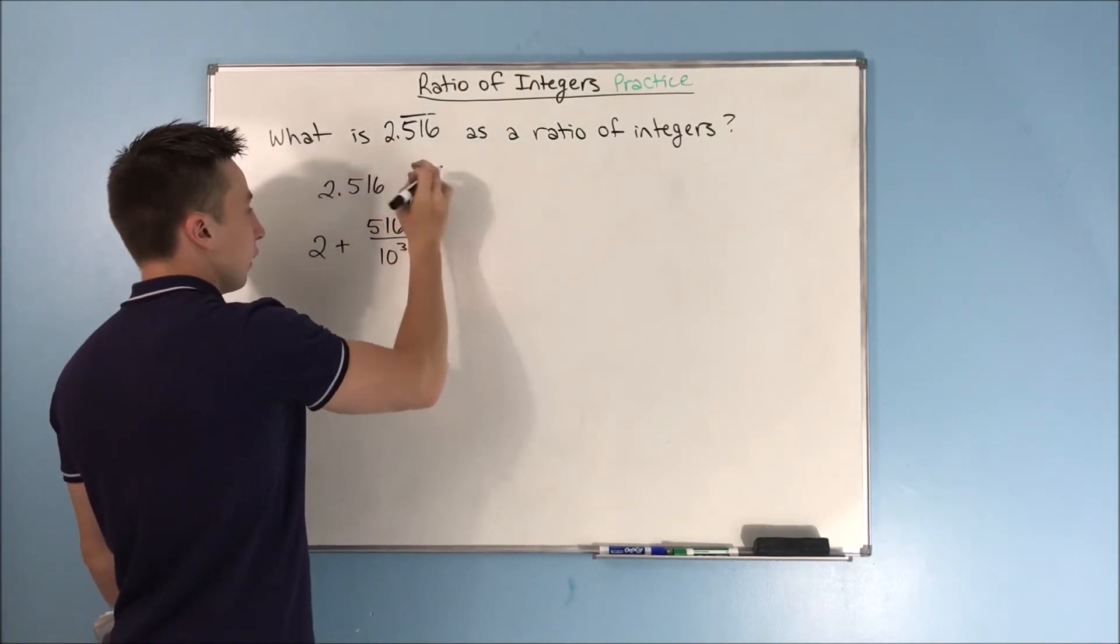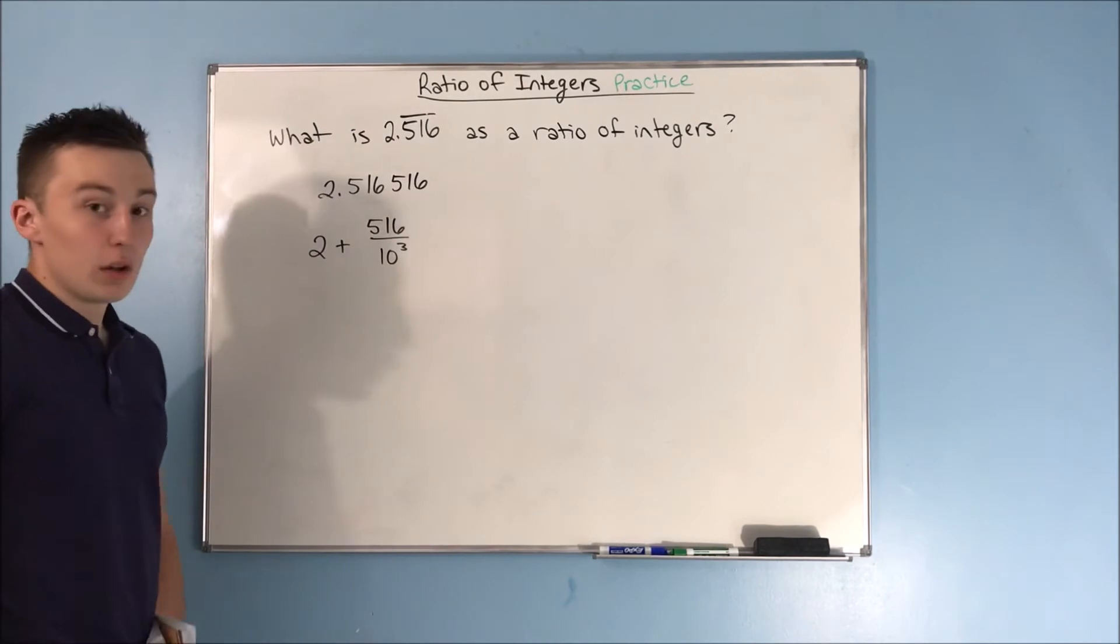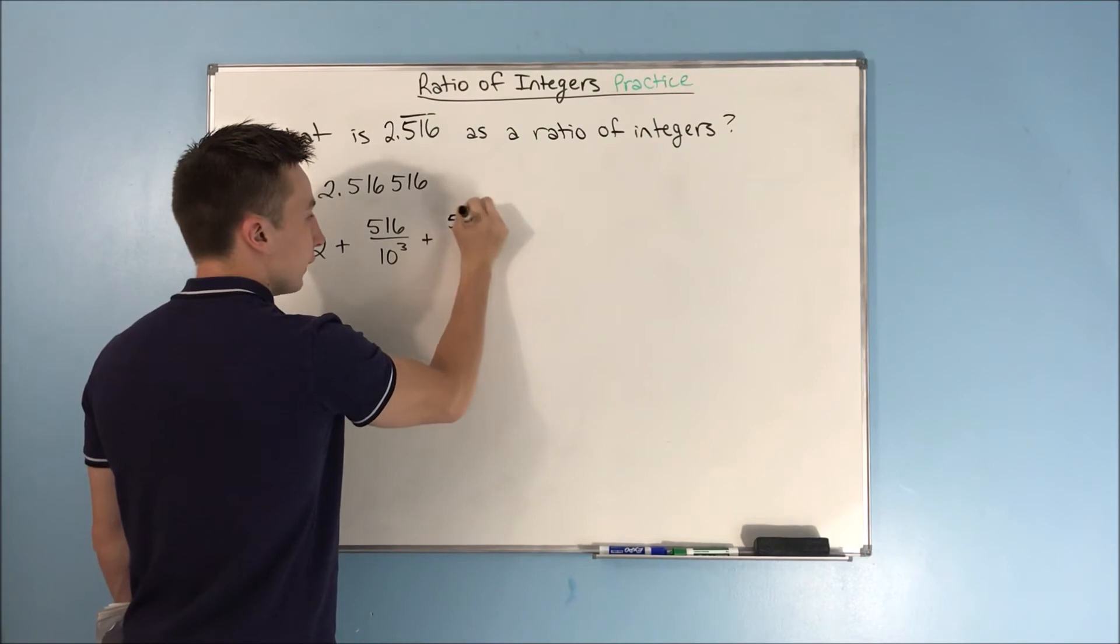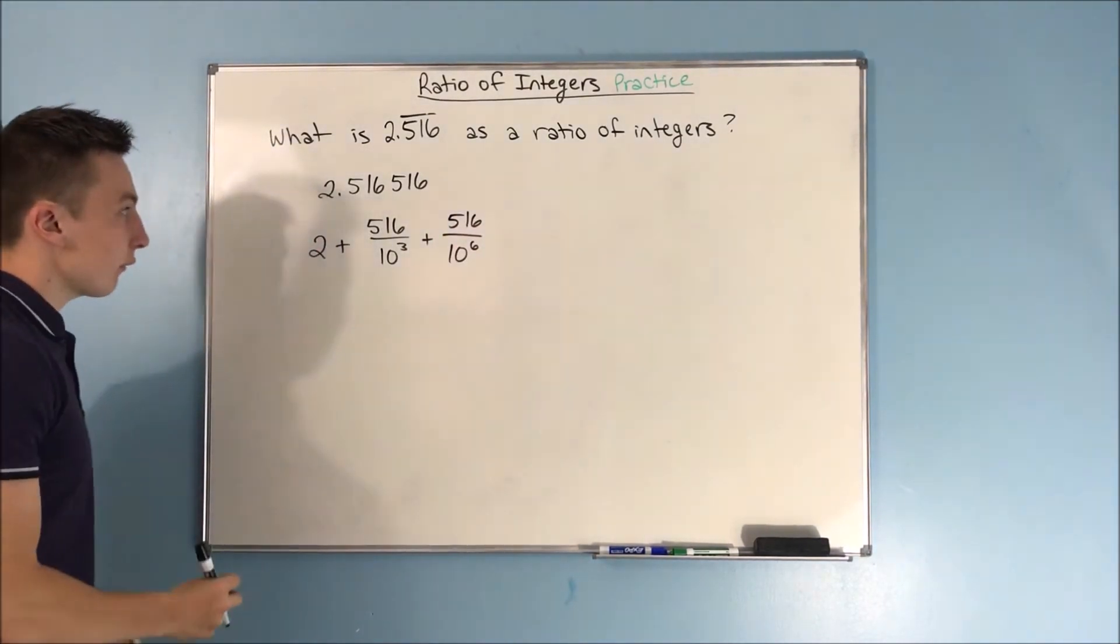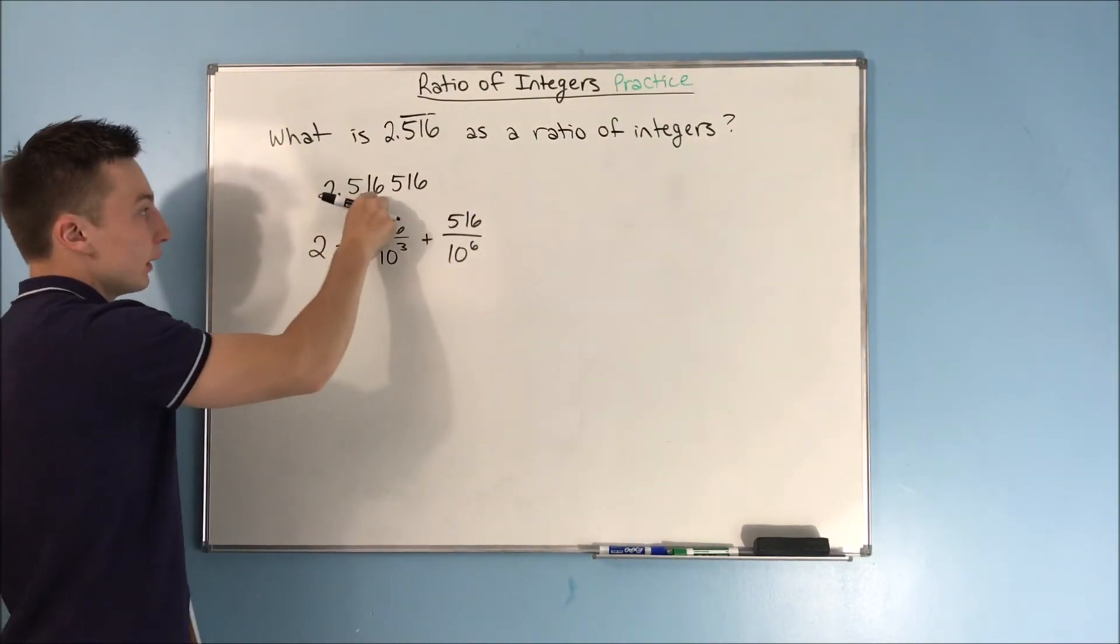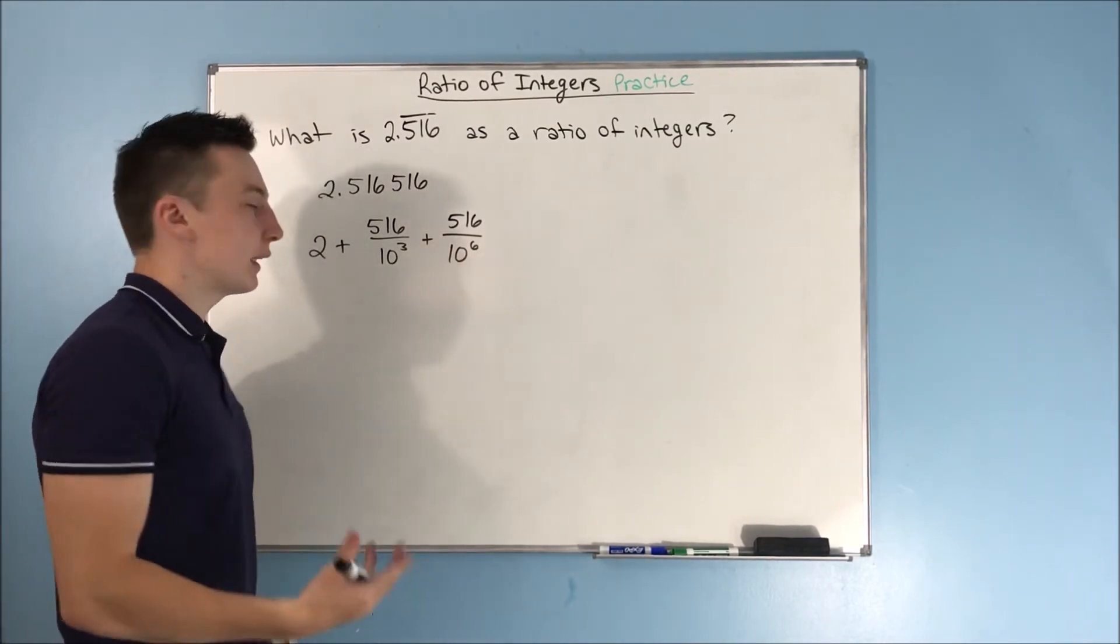We know this is repeating. Let's add another 516. Well, now, how do we get this 516 over here? We have to add 516 over 10 to the sixth power. That's how we convert 516 into this 0.000516. We have to divide it by 10 to the sixth. So this makes sense.